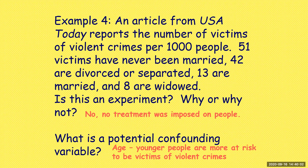What are the potential confounding variables? Age — younger people are more at risk to be victims of violent crimes because they're more active, and they're more likely to be unmarried. We also don't know what part of the country this data was taken from — the area could be a factor. But age is probably the biggest factor.